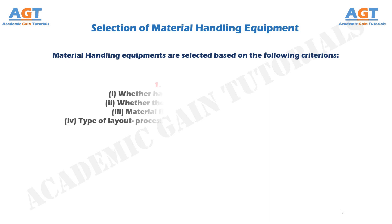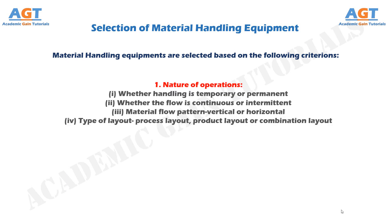Number 1: Nature of operations. This includes whether handling is temporary or permanent, whether the flow is continuous or intermittent, material flow pattern — vertical or horizontal, and type of layout: process layout, product layout, or combination layout.